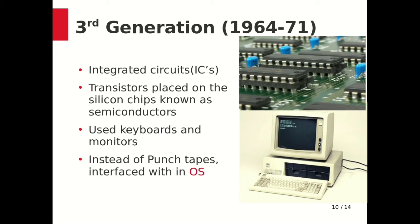In the third generation, users used keyboards and monitors and interfaced with an operating system instead of punched cards and printouts. So the evolution of the operating system started in this generation. Computers could now run many applications at one time. This generation of computers was smaller, cheaper, and more reliable than the first and second generations.